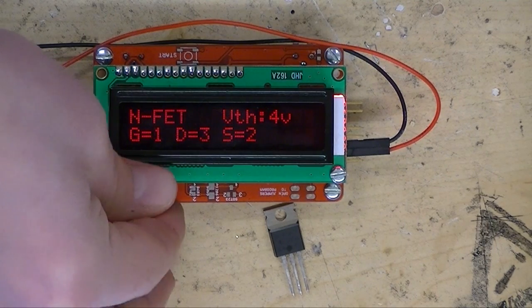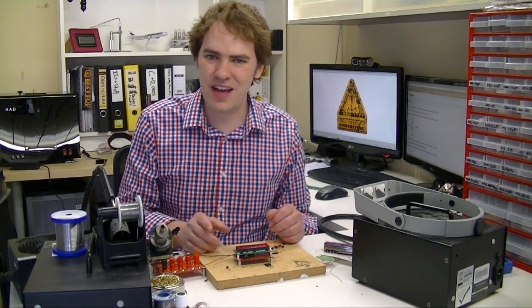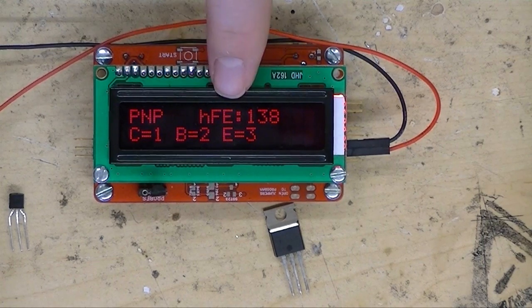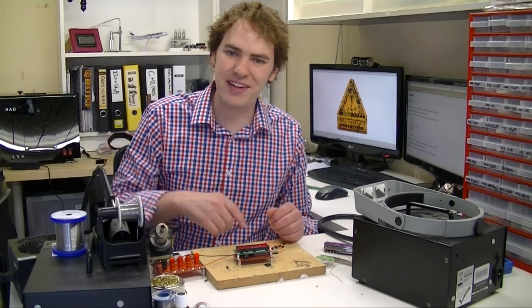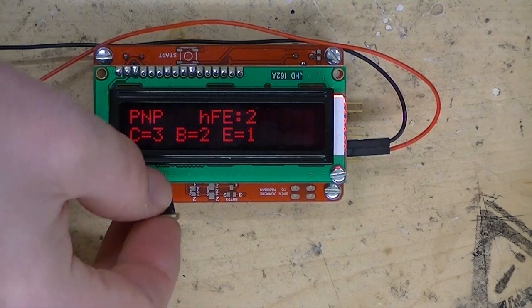So let's try a few other parts too. Now this part's a PNP transistor, the opposite of the first one. You can see we show the gain and the pinout again. Now let's try a different part, let's try a FET.